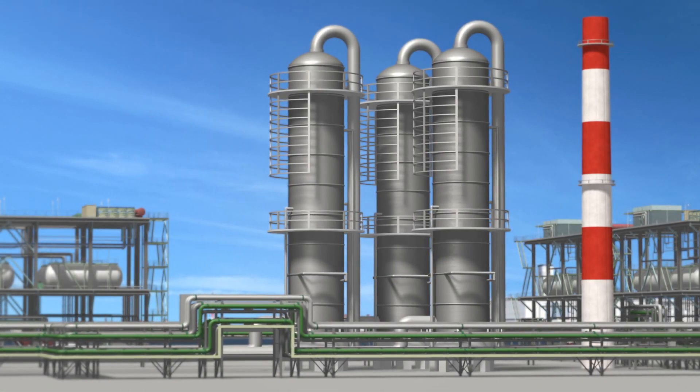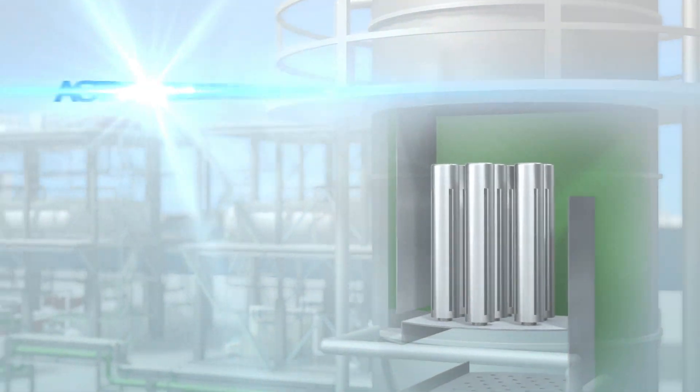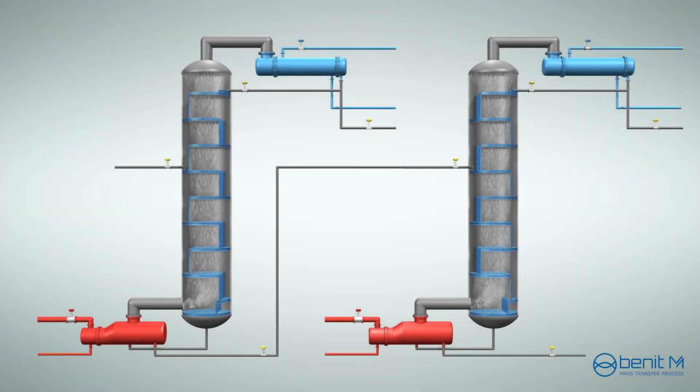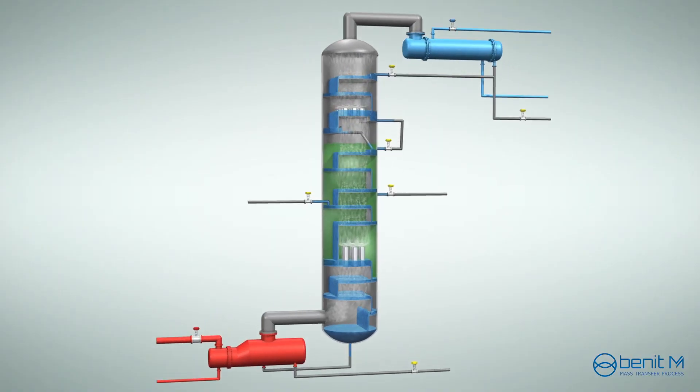This video introduces an efficient active vapor distributor for the dividing wall column. Dividing wall column is one of the effective ideas saving energy for the distillation process.